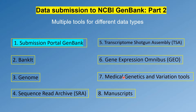The seventh is the medical genetics and variation tools, through which you can submit data you get from clinical trials and other types of human variant data. The last one is manuscripts — only NIH-affiliated authors, those people working in the National Institute of Health, can submit papers using this tool. In this video our goal is small: I will be talking briefly about the first tool, the Submission Portal.